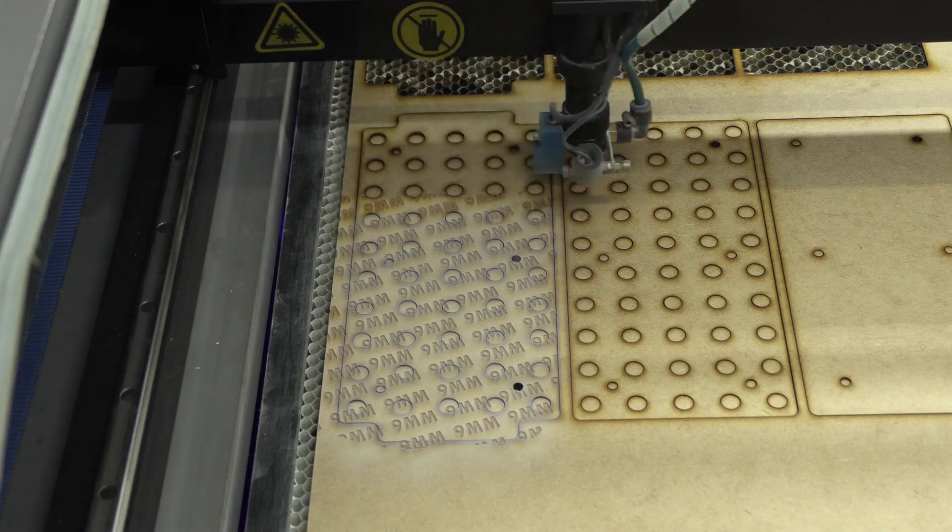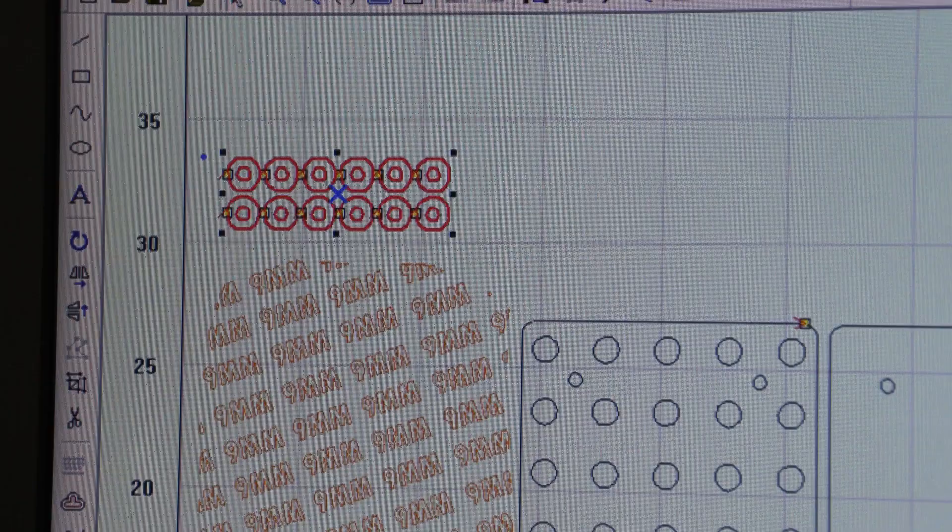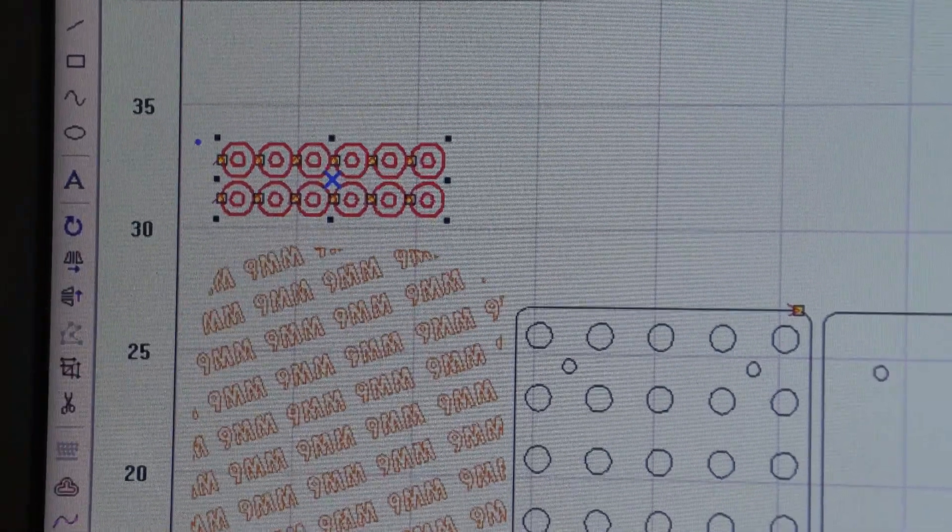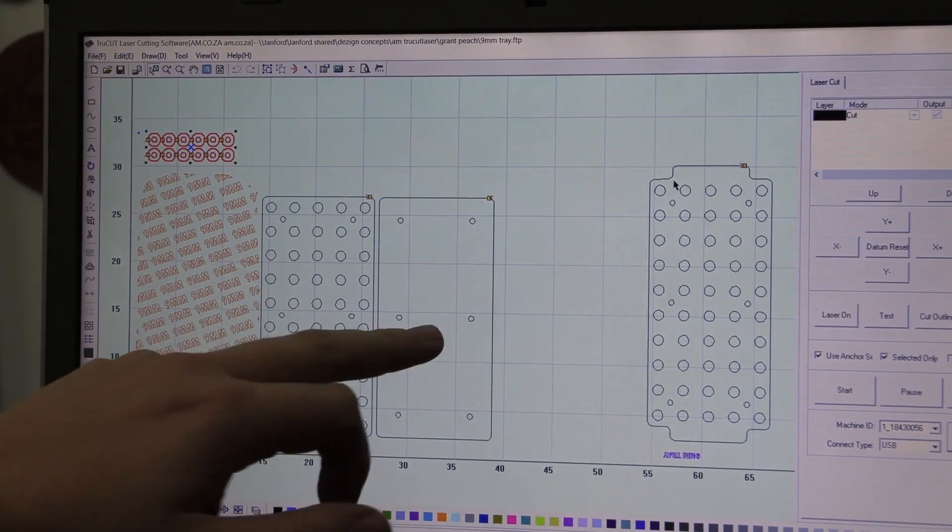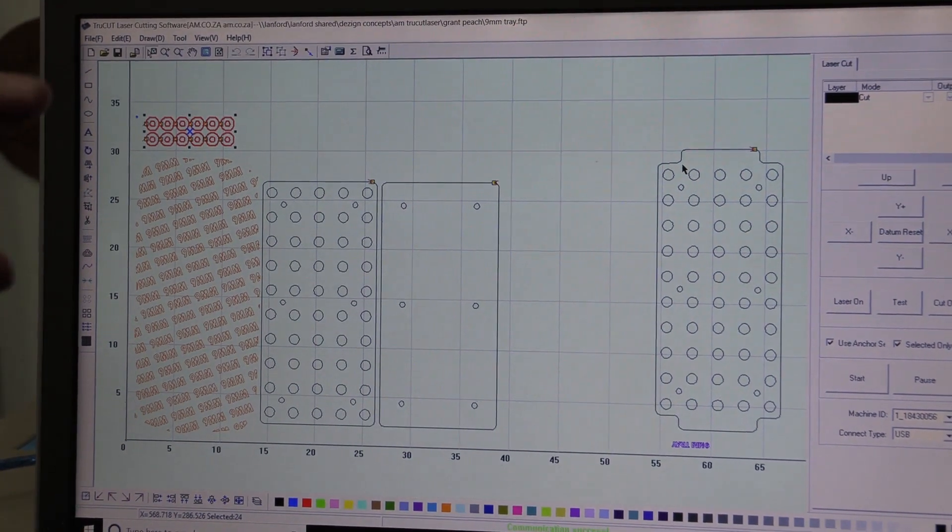Now that we've done the engraving, we're going to move to cutting out the washers. These will go in between all the layers, between the top, middle, and bottom near the holes here, just to give it a bit of space.